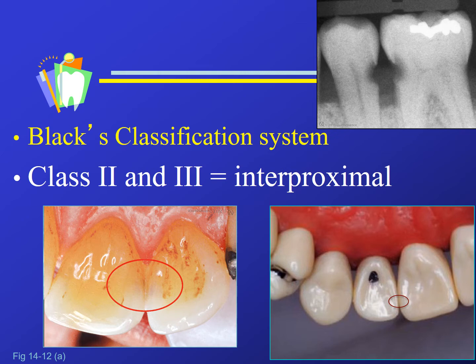We look at the smooth surface areas and break it down to further describe where classes two, three, four, five, and six will be found. Classes two and three are both interproximal. Here in this upper right hand picture, it's a radiograph — we see the darker areas near the CEJ area on the interproximal of posterior teeth.